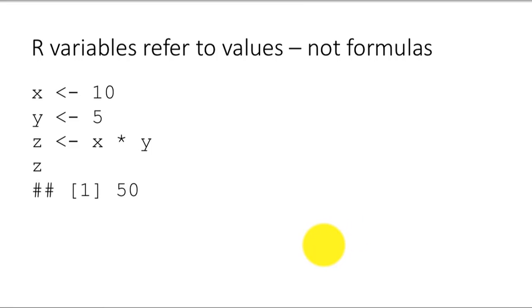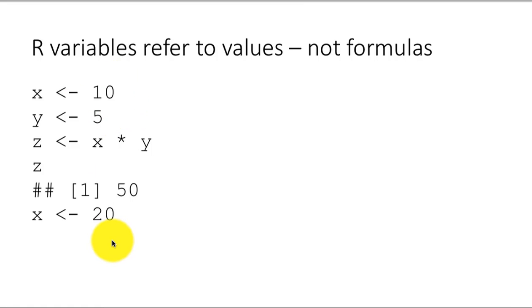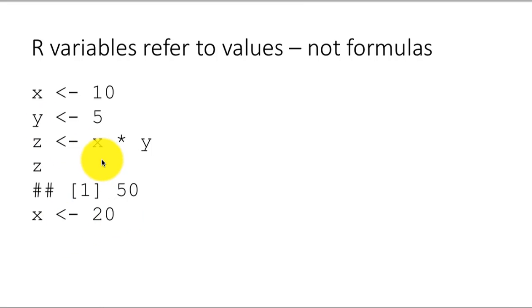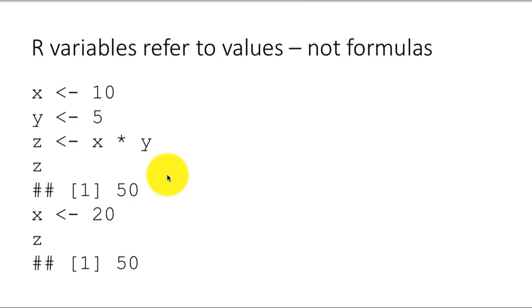So now I type z and I see that the value is 50. Now I say x is assigned the value 20 — I changed x from 10 to 20. This has no impact on z. Because z was referring to a value which was computed based on the values that x and y had at that time. Z is not holding on to the formula. So we cannot expect that after changing x to 20, z will suddenly become 100. That's not going to happen. Z is still 50. Changing x had no impact on z because z is just holding on to the value that it computed at a point in time.